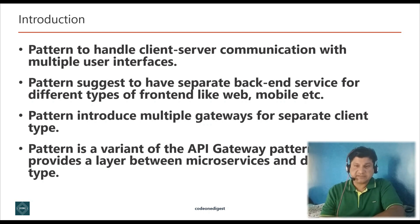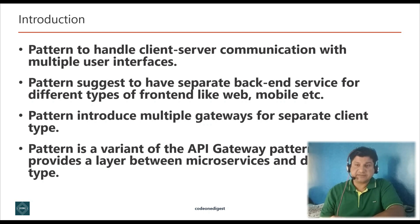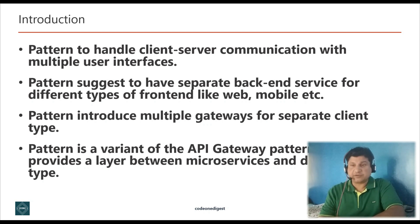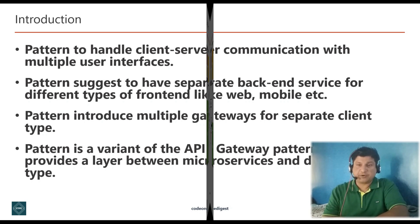This pattern optimizes the user experience for each interface type by using a separate backend service for them. It avoids having a single backend service that serves many different interfaces with different needs, which can become complex and hard to maintain. Backend for frontend design pattern is a variant of the API gateway design pattern but also provides an additional layer between the microservices and each client type separately.